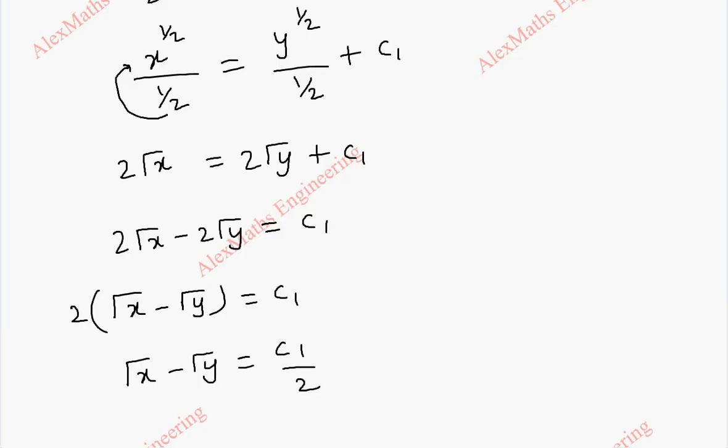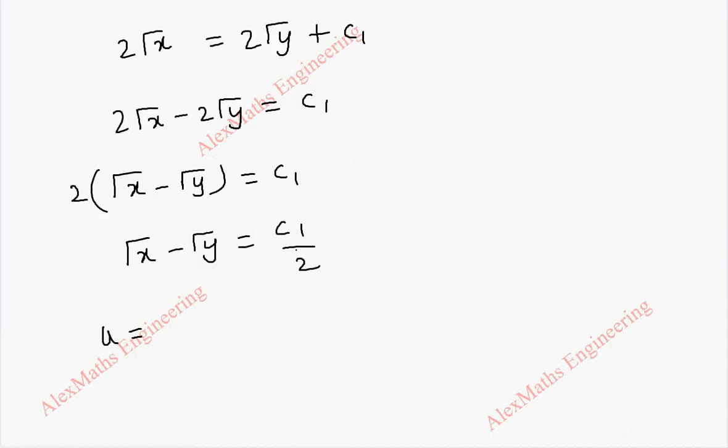So which is root x minus root y. And the added term can be taken as u. Because when we have c1, if it is multiplied with any negative number or divided by any number, positive number, everything is same. Constant with something is again a constant. And so u is root x minus root y.